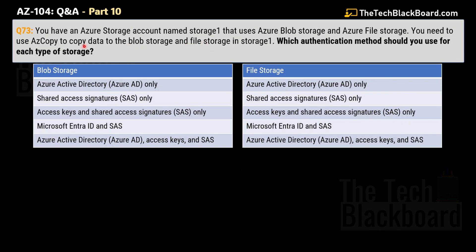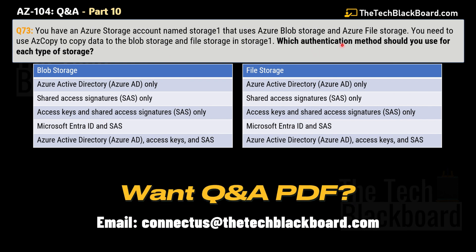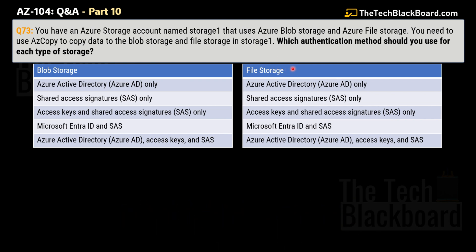Question number 73: You have an Azure storage account named Storage1 that uses Azure Blob Storage and Azure File Storage. You need to use AZ Copy to copy data to Blob Storage and File Storage in Storage1. Which authentication method should you use for each type of storage? We are given two tables — the first represents Blob Storage and the second represents File Storage.